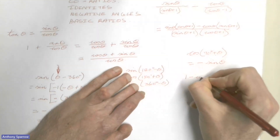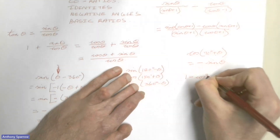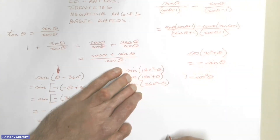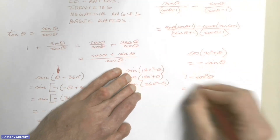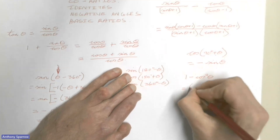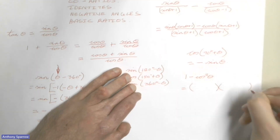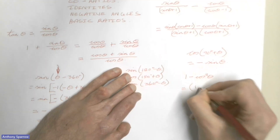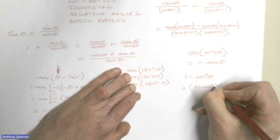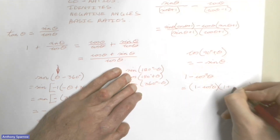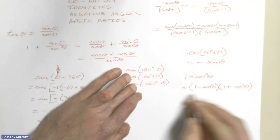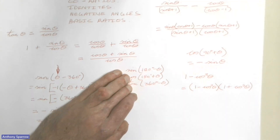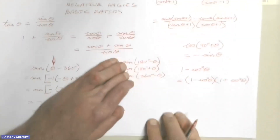Another thing that is sometimes tricky: don't forget that 1 − cos²θ, used in one of your identities, can also be used as a difference of two squares, which factorizes into two brackets: (1 − cos θ)(1 + cos θ). That's very handy to remember when you're struggling with an identity or an equation.